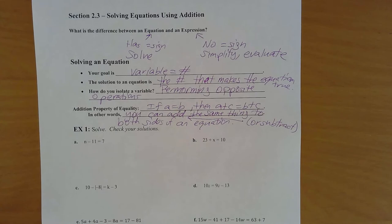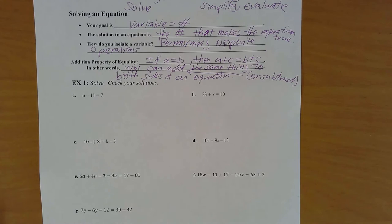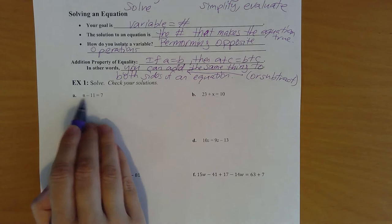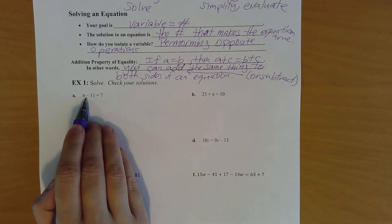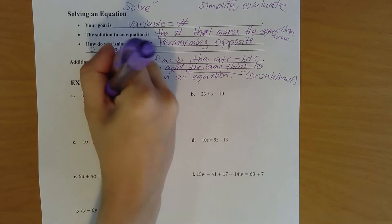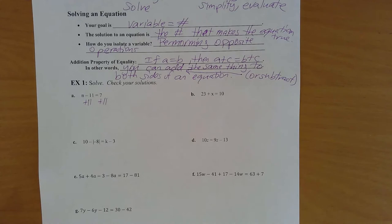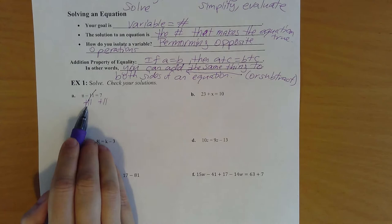Let's try a few examples. In part a, I have n minus 11 equals 7. We have two sides: the left side has n minus 11, the right side has 7. On the same side as n I have a minus 11 that I want to get rid of. The opposite of subtracting is adding, so to get rid of the minus 11 I'm going to add 11 to both sides. Whatever I do to one side I have to do to both sides so that it stays balanced.